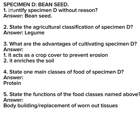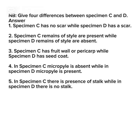Students should take note of the following question: give four differences between Specimen C and D. Answer: number one, Specimen C has no scar while Specimen D has a scar. Number two, Specimen C has remains of cells present while Specimen D has remains of cells absent.